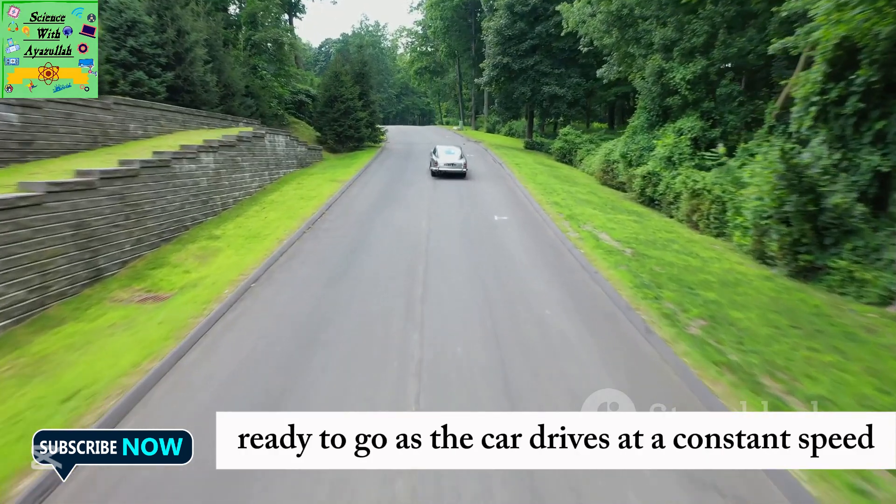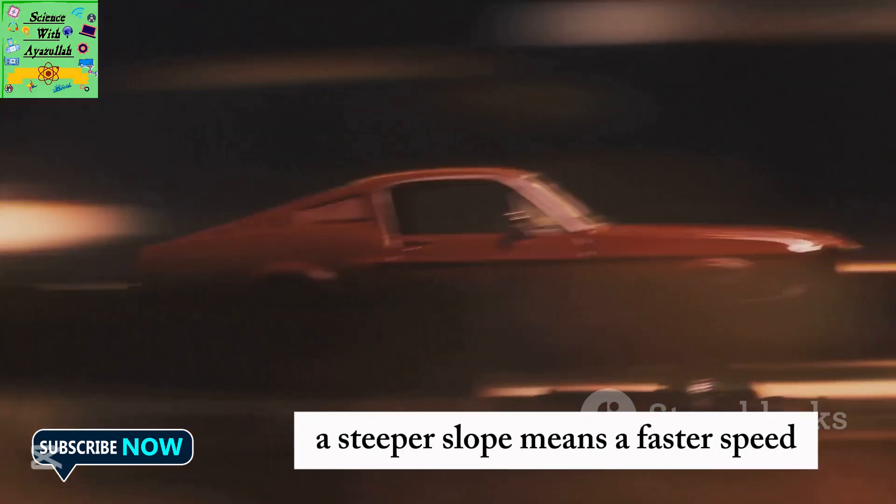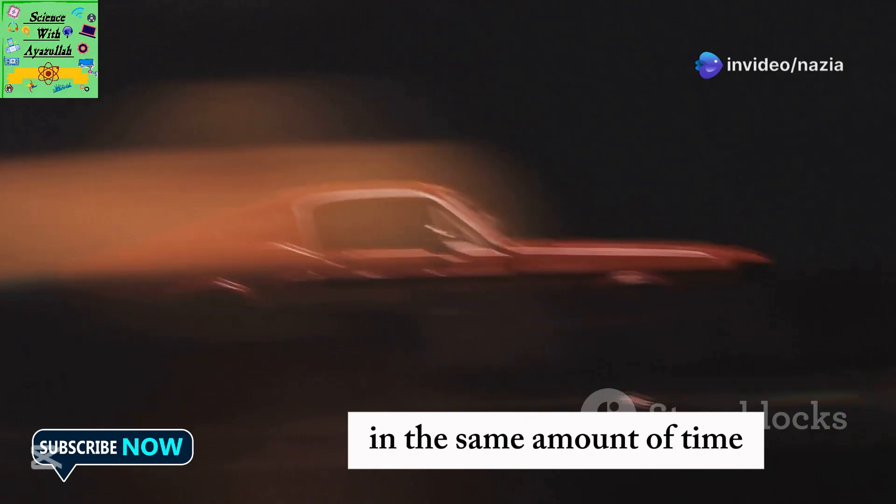As the car drives at a constant speed, the line on our graph slopes upwards. A steeper slope means a faster speed. The car is covering more distance in the same amount of time.